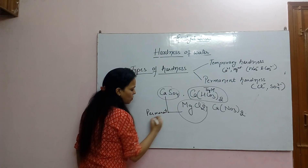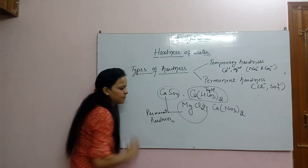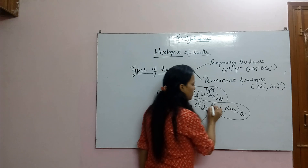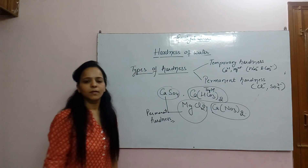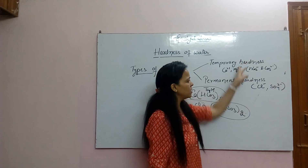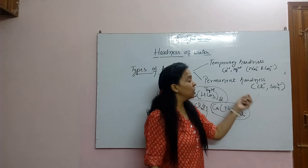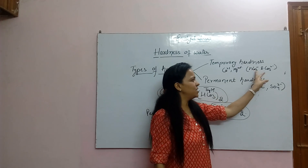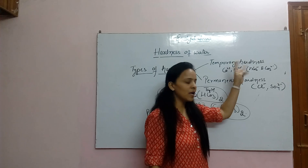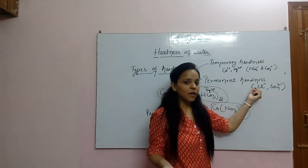Now what about calcium nitrate? Which type of hardness is it — temporary or permanent? Calcium bicarbonate is temporary hardness, and calcium chloride is permanent hardness. So what about calcium nitrate?